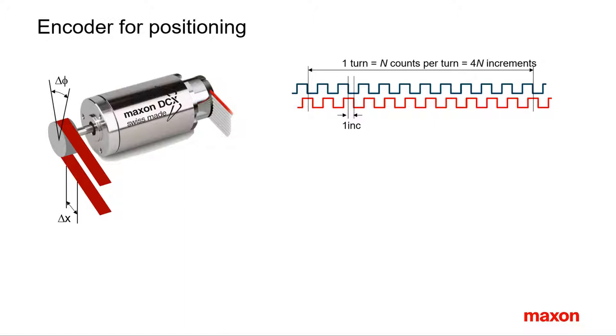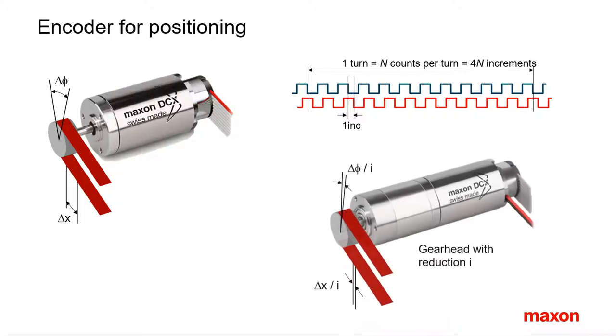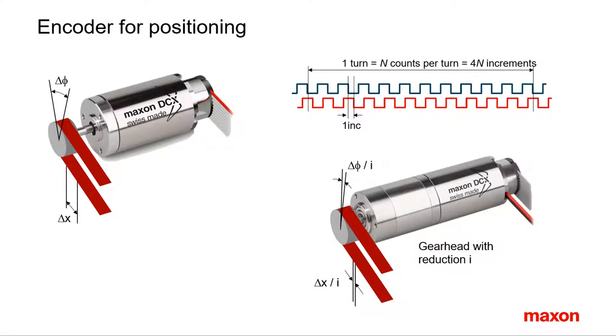Observe, encoders are mounted on the motor. A gearhead reduction increases the resolution at the load by the reduction ratio of the gear. Therefore, in combination with gears or other mechanics, encoder resolution hardly ever needs to be higher than about 256 counts per turn. In addition, be aware that the mechanical play usually makes any higher resolution useless.